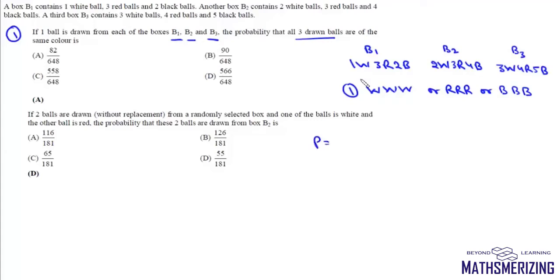Now this probability, white from this first box is 1 by 6, white from second is 2 by 9 and white from third is 3 by 12.